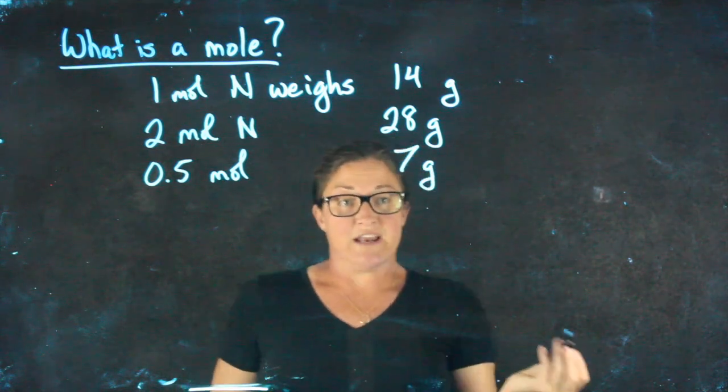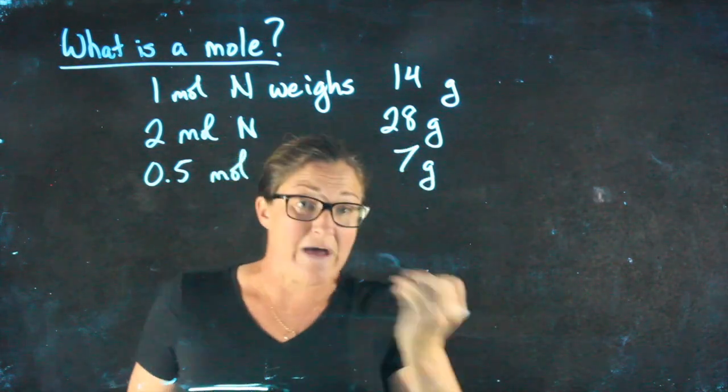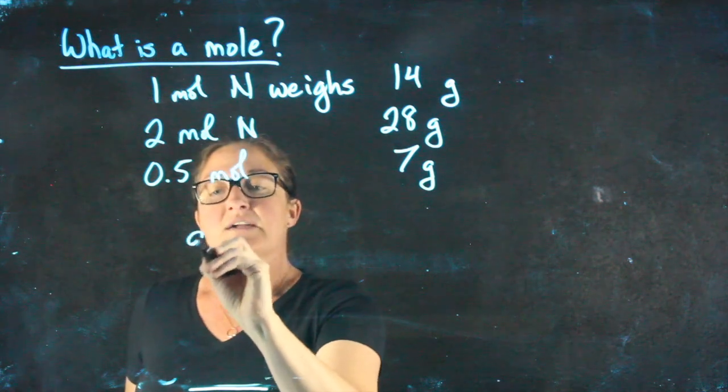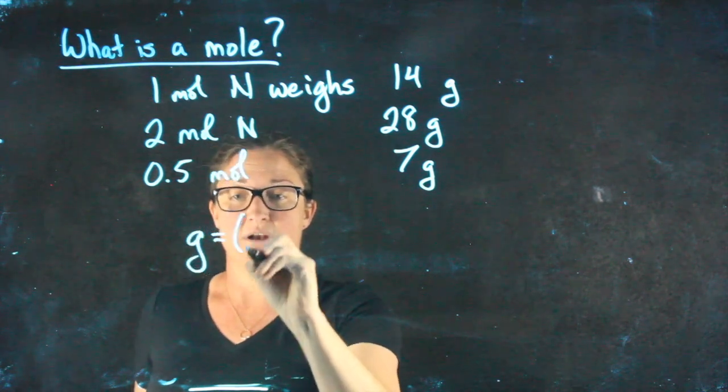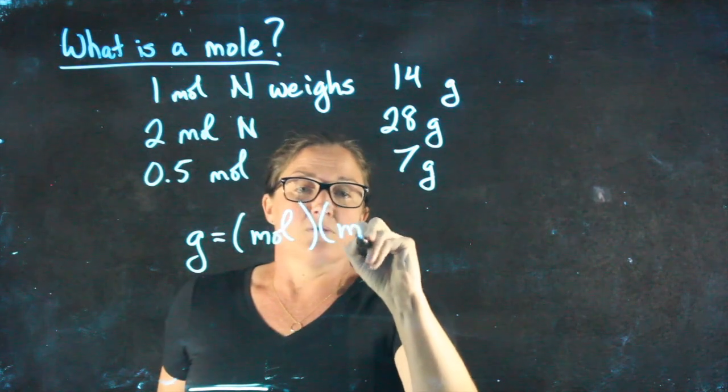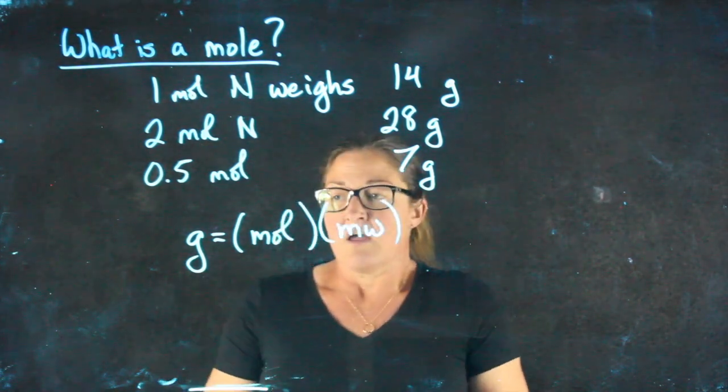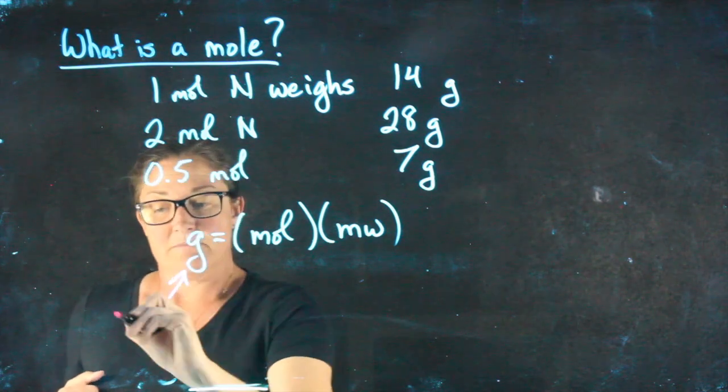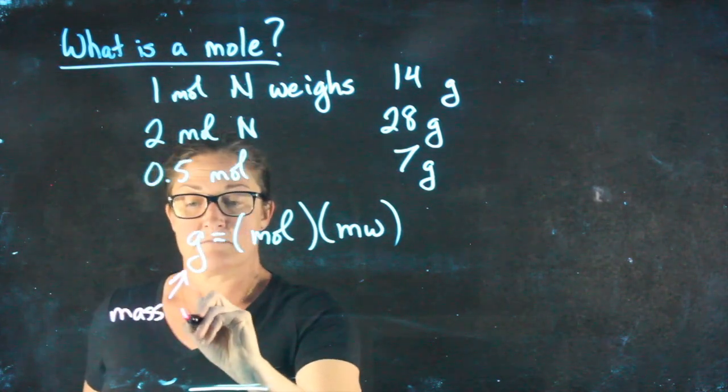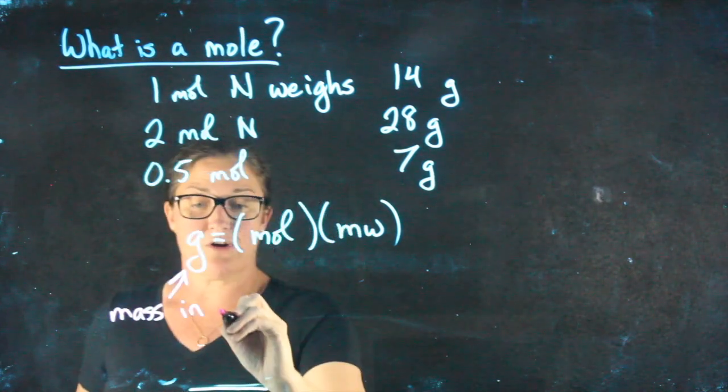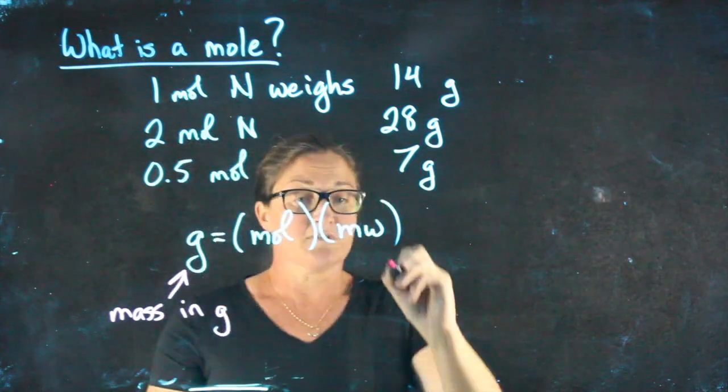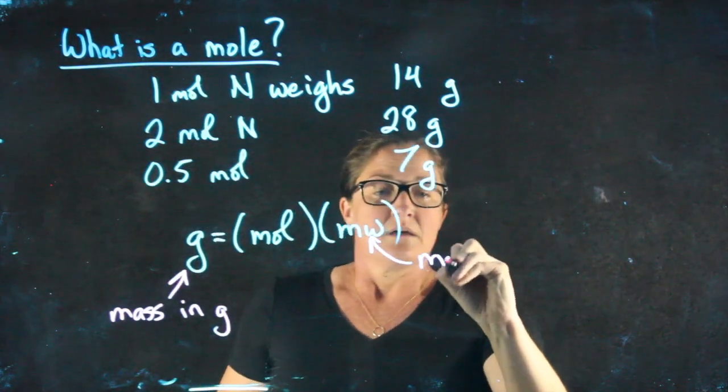What we have just created here, or worked with without you realizing what we're doing, is our first formula of this unit. Grams equals moles times molecular weight. Another name for grams, if we say mass, we typically mean grams. Moles. Molecular weight.